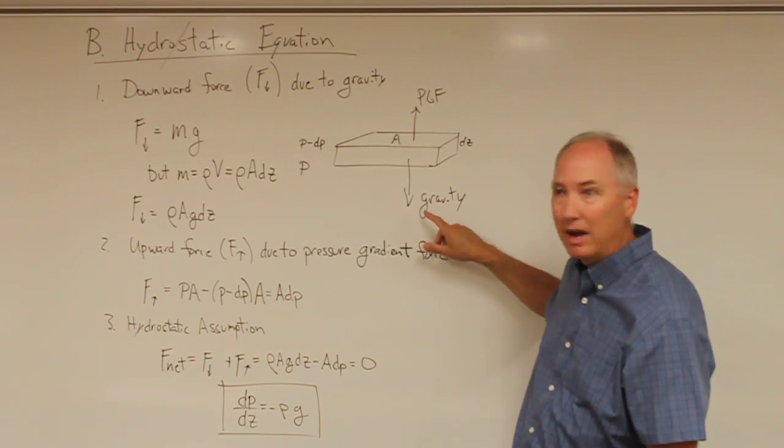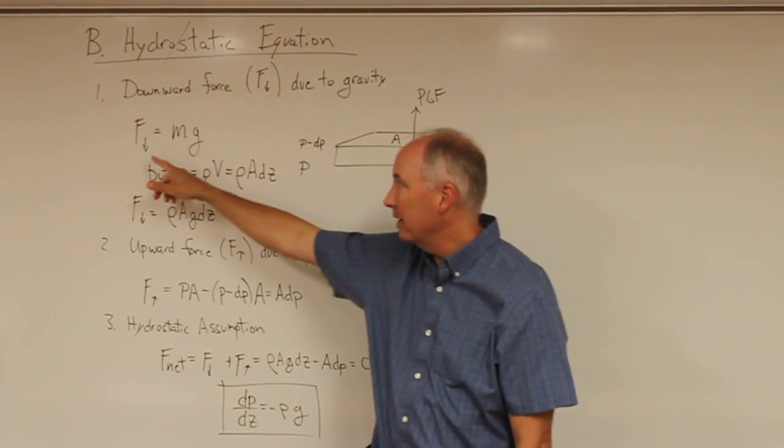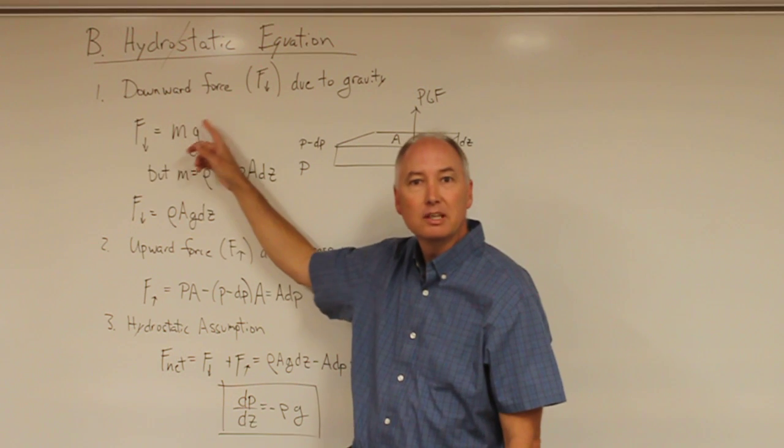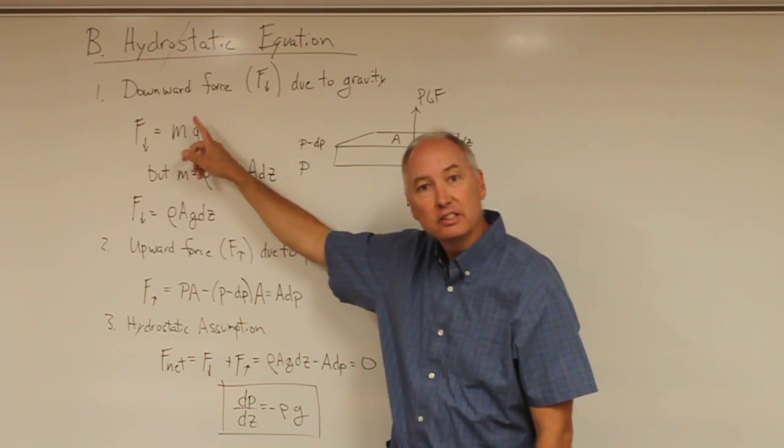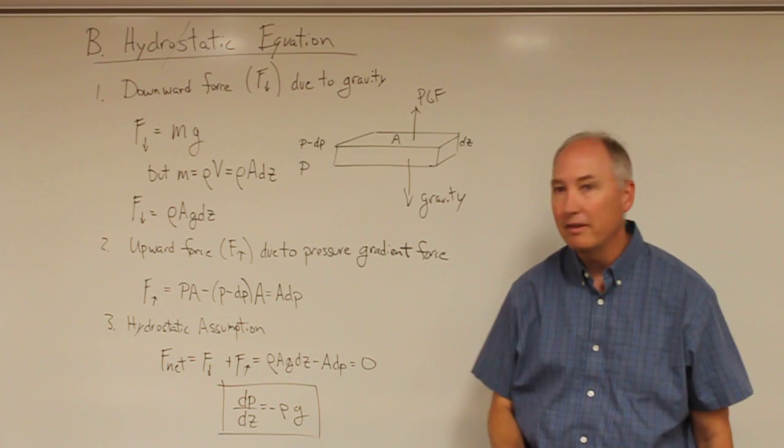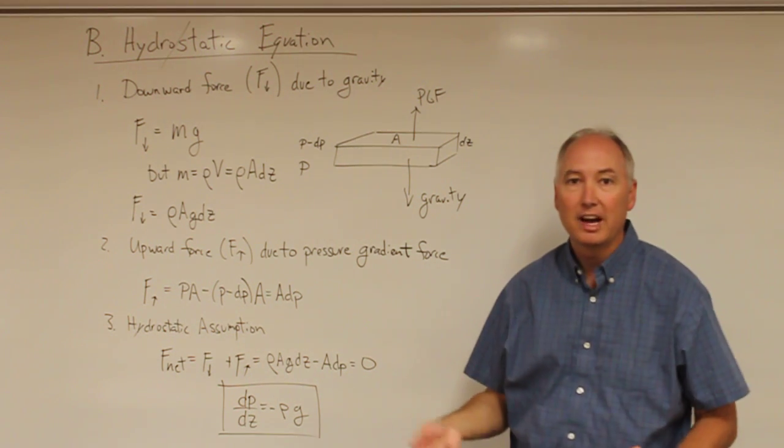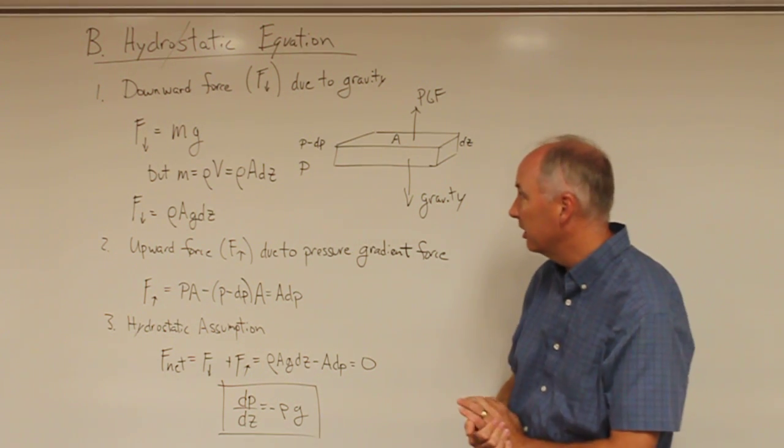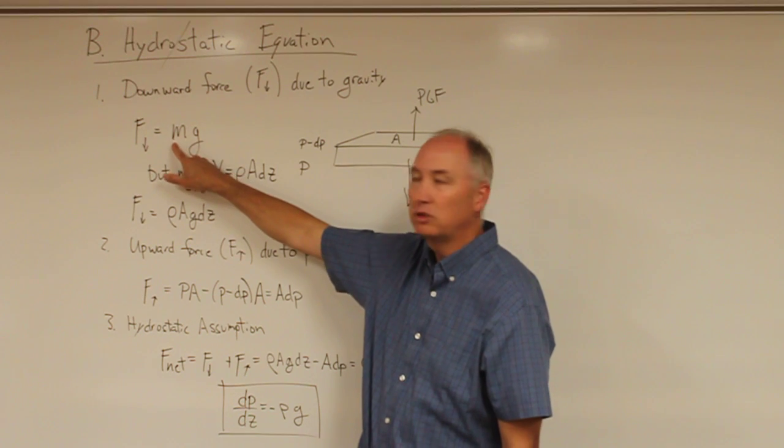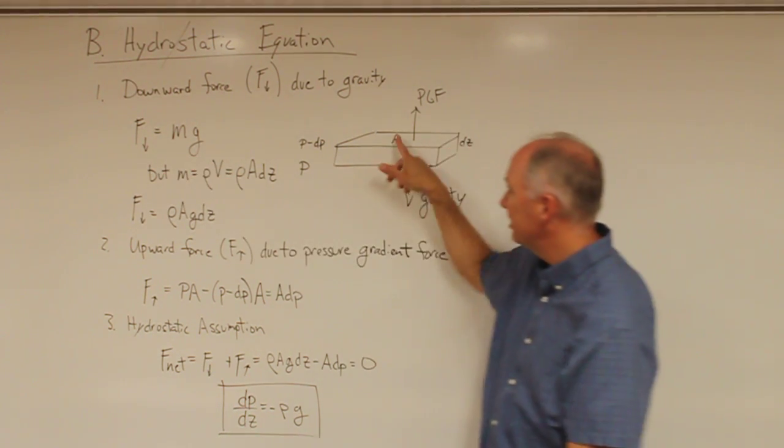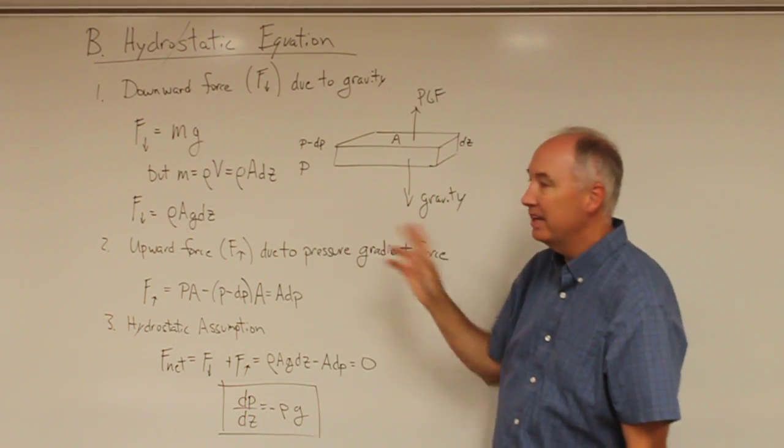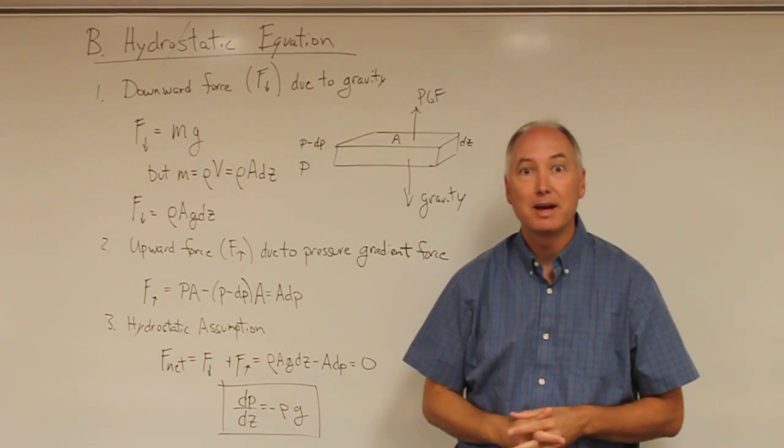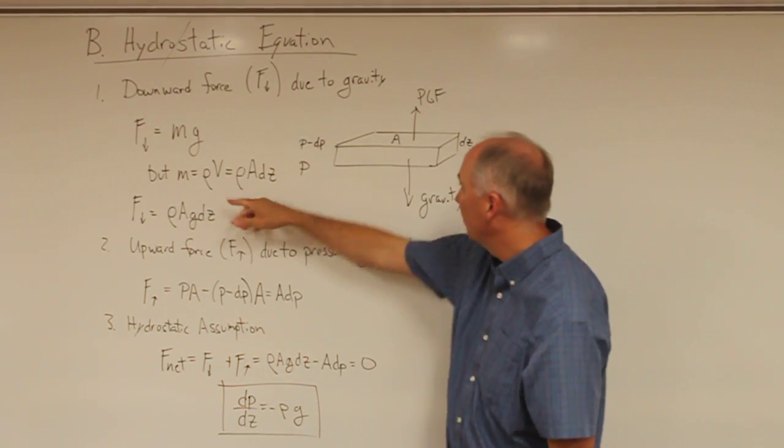So let's take a look at the downward force of gravity first. You might recall that force is equal to mass times acceleration. And in this case, the acceleration is due to gravity, which is approximately 9.81 meters per second squared.